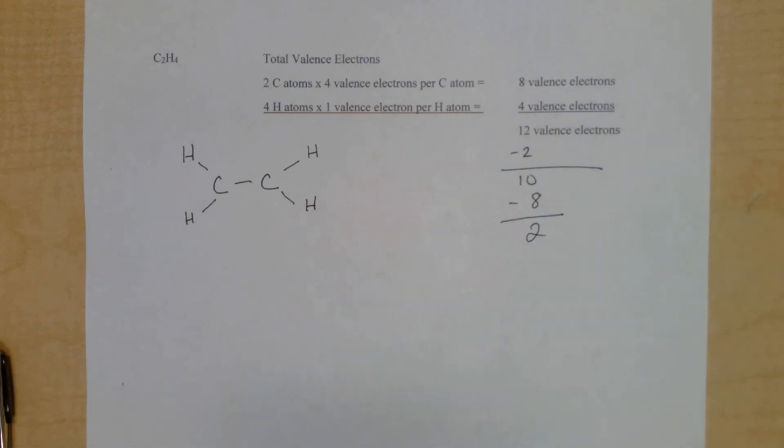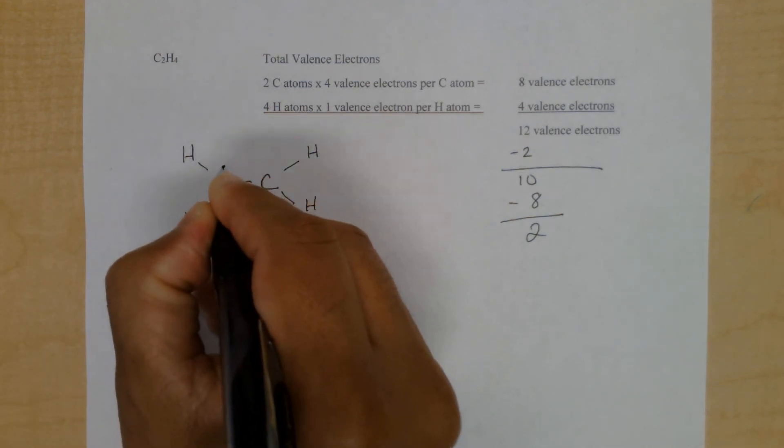Interestingly, each carbon atom only has 6 valence electrons. Recall, carbon atoms are most stable when they follow the octet rule. I'll draw the final pair of electrons on one of the carbon atoms.